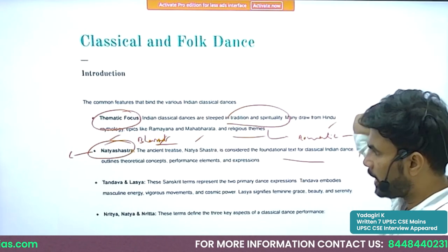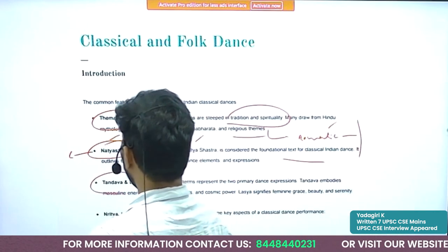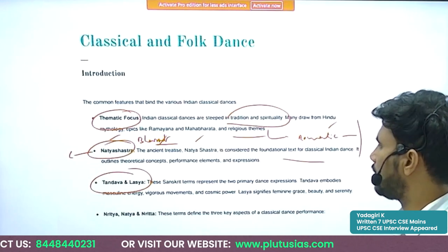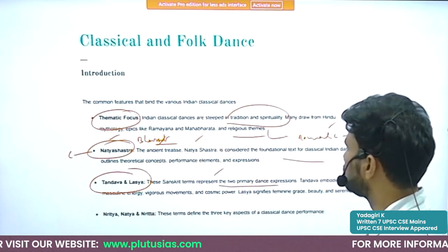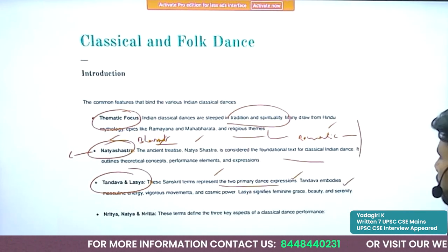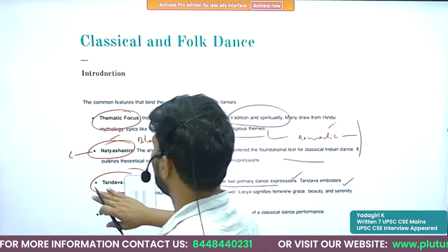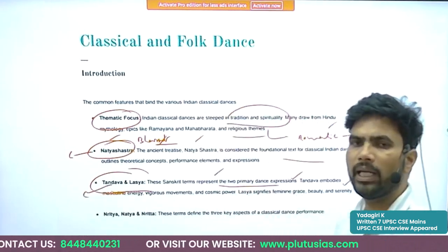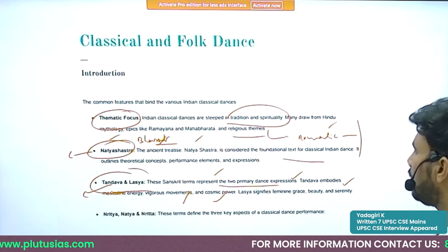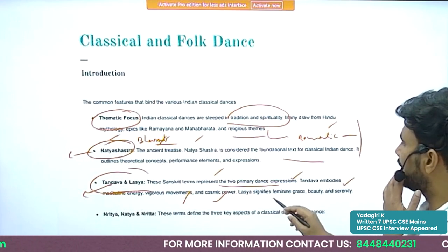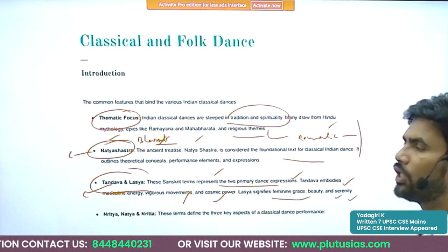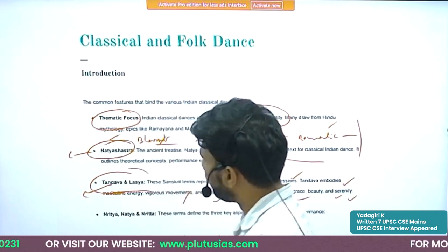Important aspects of classical dances include Tandava and Lasya. These two Sanskrit terms represent two primary dance expressions. Tandava embodies masculine energy — associated with male dance, vigorous movements, and cosmic power. Lasya signifies feminine grace, beauty, and serenity.